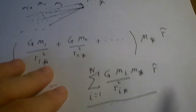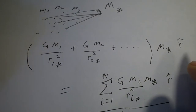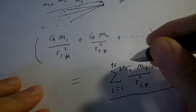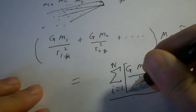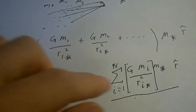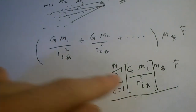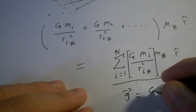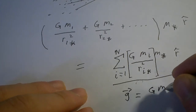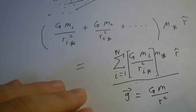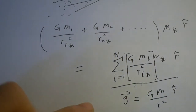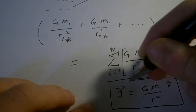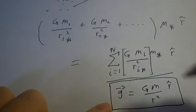From this we can define the gravitational field g, which I'll denote as lowercase g, equaling capital G times m over r squared in the r-hat direction. This is the equation for a gravitational field from a point mass.